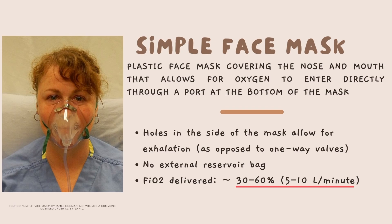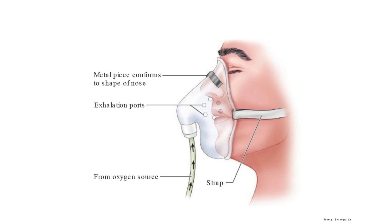Now let's review the simple face mask. This is a plastic face mask that covers the nose and mouth and allows oxygen to enter directly at the bottom of the mask. The holes on the sides of the mask allow for exhalation — these are not one-way valves. There is no external reservoir bag. The FiO2 delivered goes from 30% up to 60%, using an oxygen flow rate of 5 up to 10 liters per minute. You can see the face mask covering the nose and mouth with the oxygen source at the front.